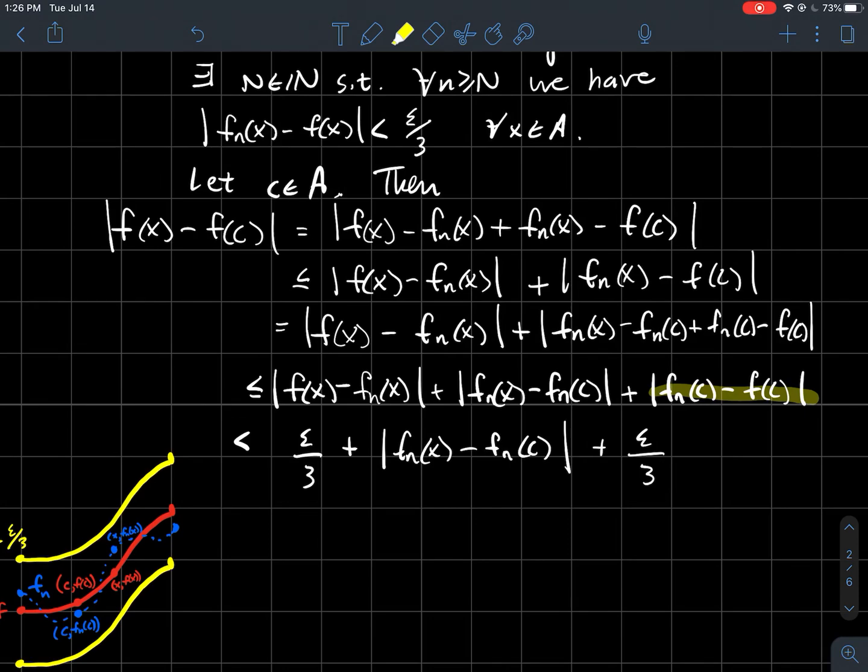So again, that didn't matter whether it was at x or it was at c, I get to conclude that for both of these, because that worked for all x in A. Now the last thing that I got to do is I got to argue to you, why should this be arbitrarily small?